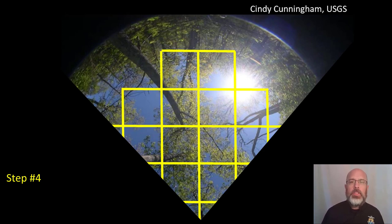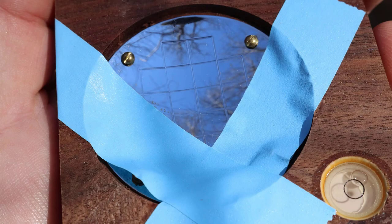Now let's move on to step four: how do I take the readings in the spherical densitometer? The first step is to make sure your head is positioned correctly. Just as with the tripod setup for leveling and correct height, it's important to position your head the same way for repeatability. Hold the densitometer out about 12 inches and bring it towards you just until your head starts to show up in the mirror. When your head is right up against the grid, you're good to go.